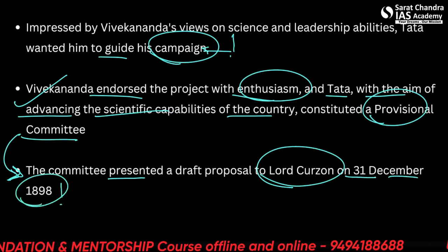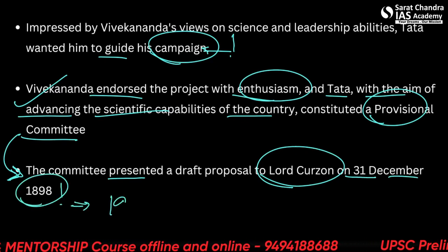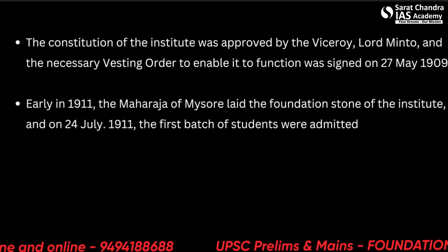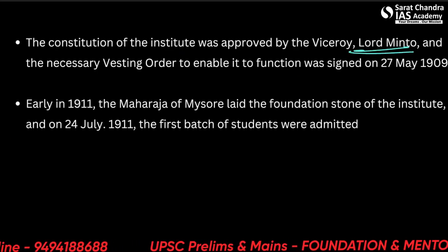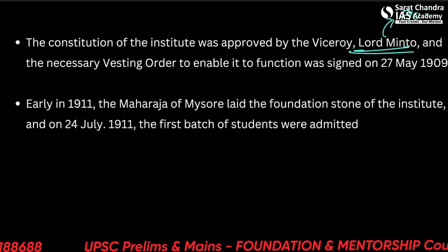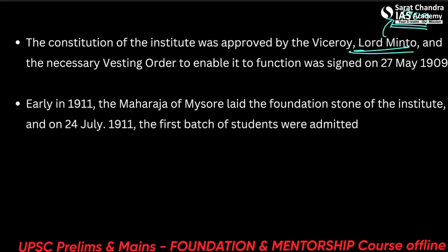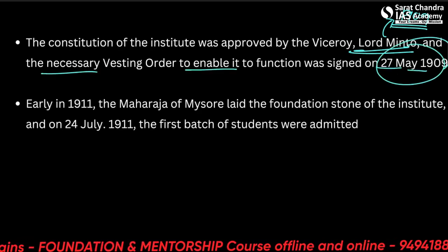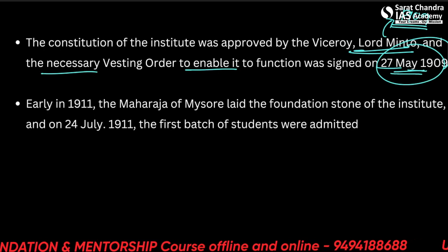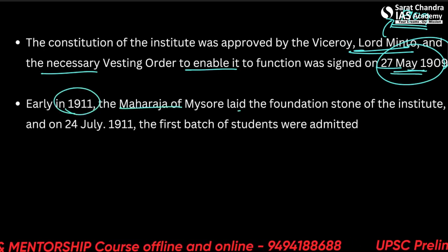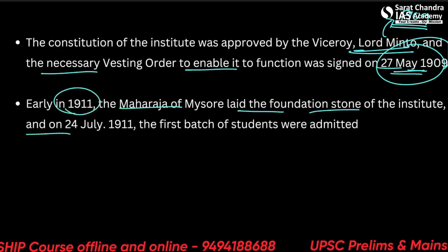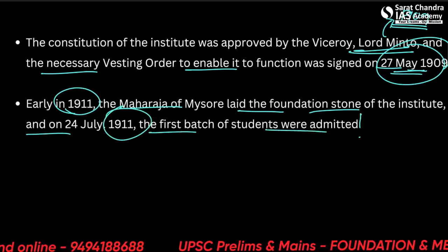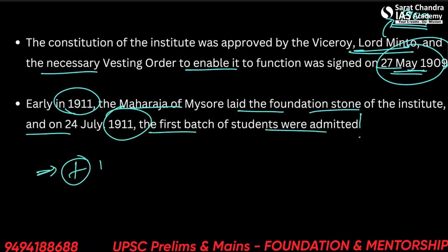These discussions happened even before 1900. The constitution of the institute was approved by Viceroy Lord Minto — the same Minto of the 1909 Morley-Minto reforms — and the vesting order enabling it to function was signed on 27th May 1909. In early 1911, the Maharaja of Mysore laid the foundation stone, and in 1911 the first batch of students was also admitted. This can be added to modern history as well.